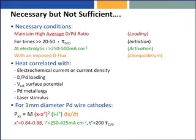You need electrochemical current densities that are high by electrochemical standards, and you need this imposed deuterium flux. We see a correlation with electrochemical current density, the D/Pd loading, and the surface potential — which is also a measure of the chemical potential of hydrogen on the surface.